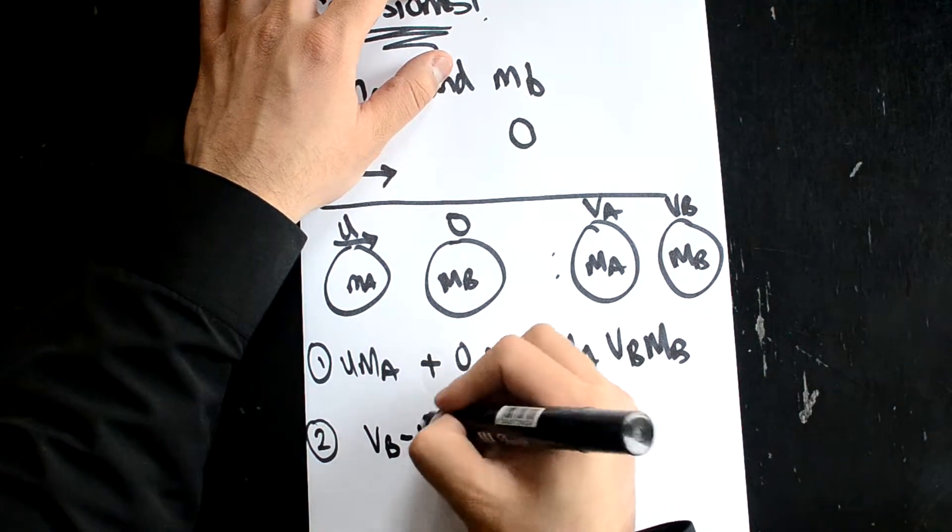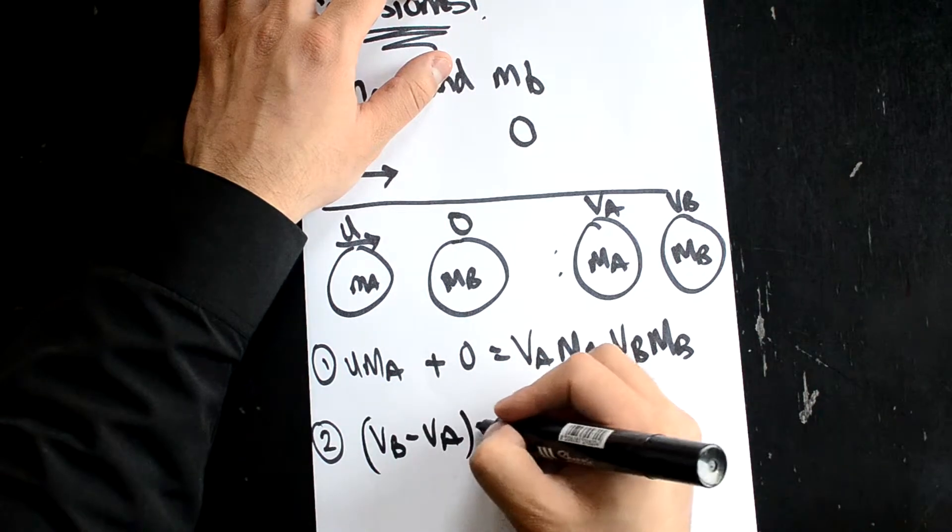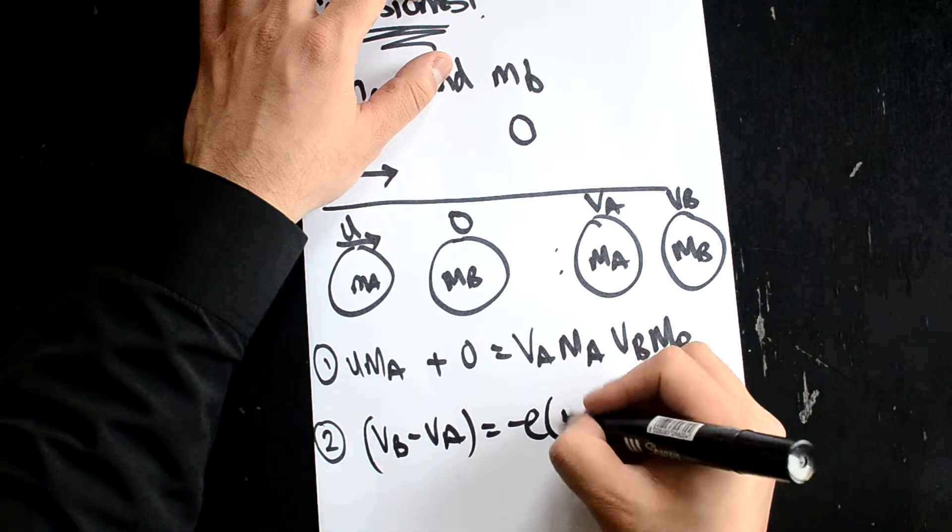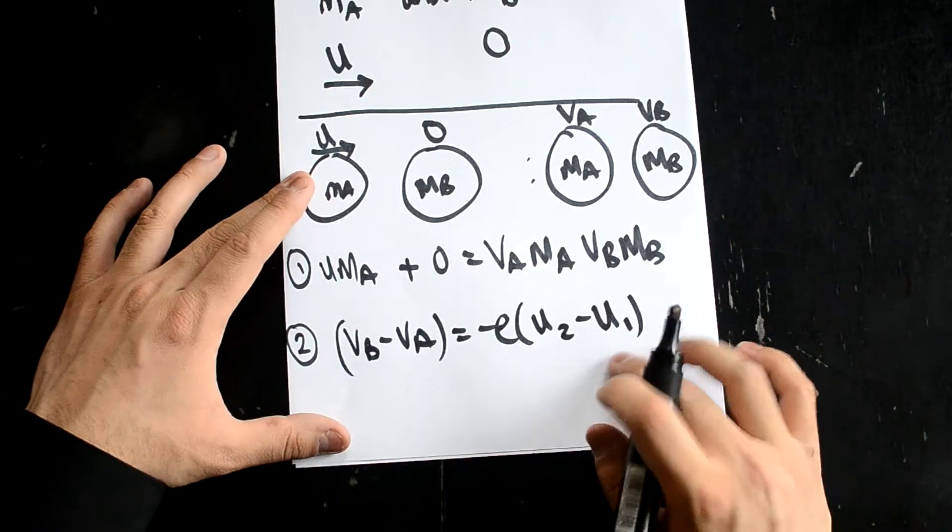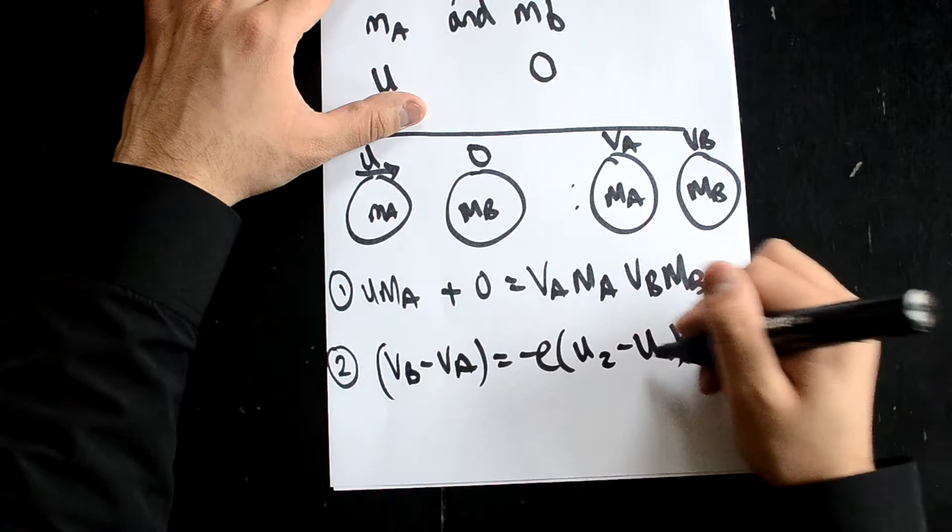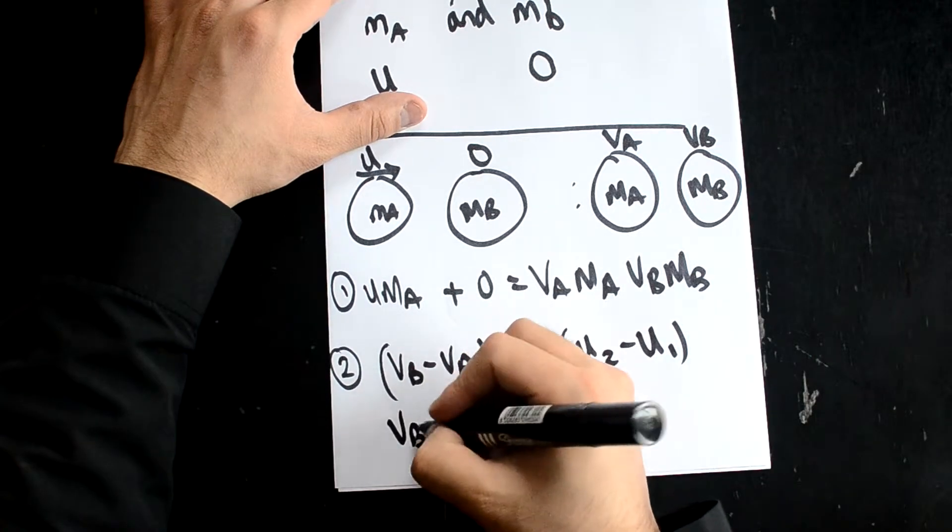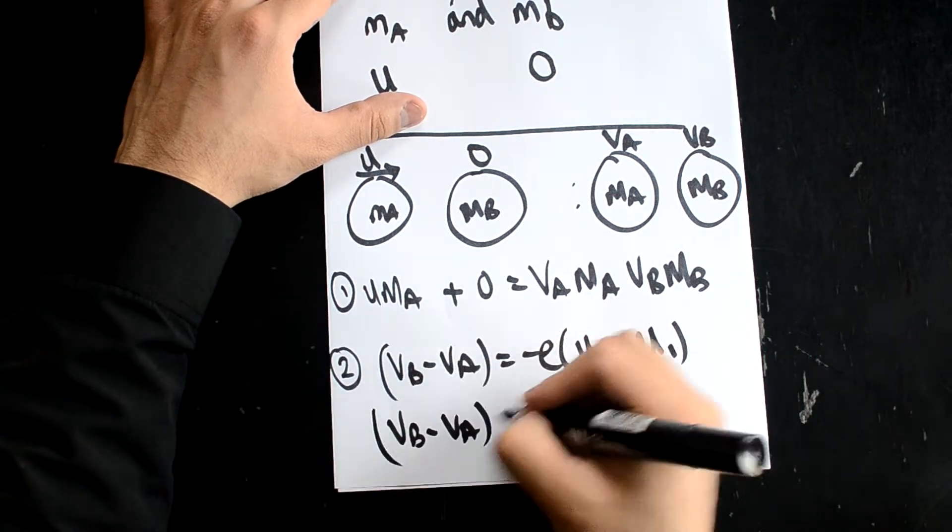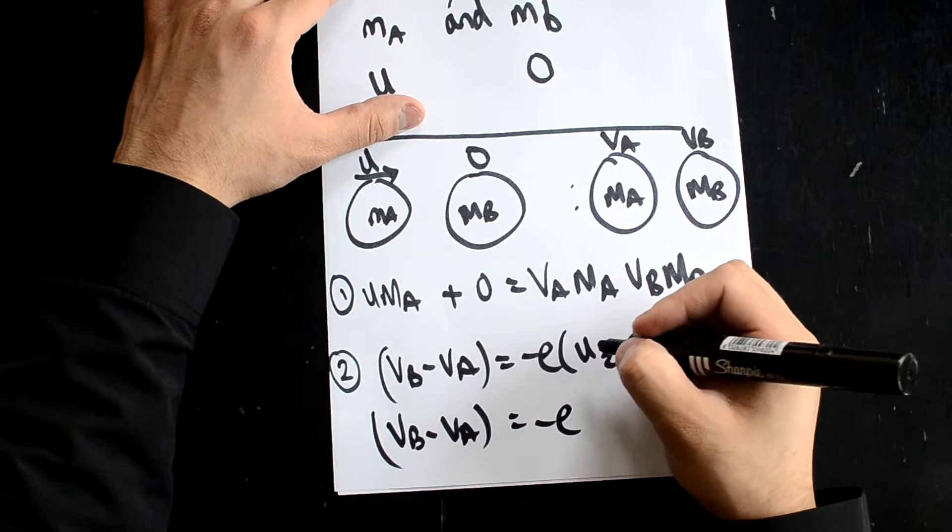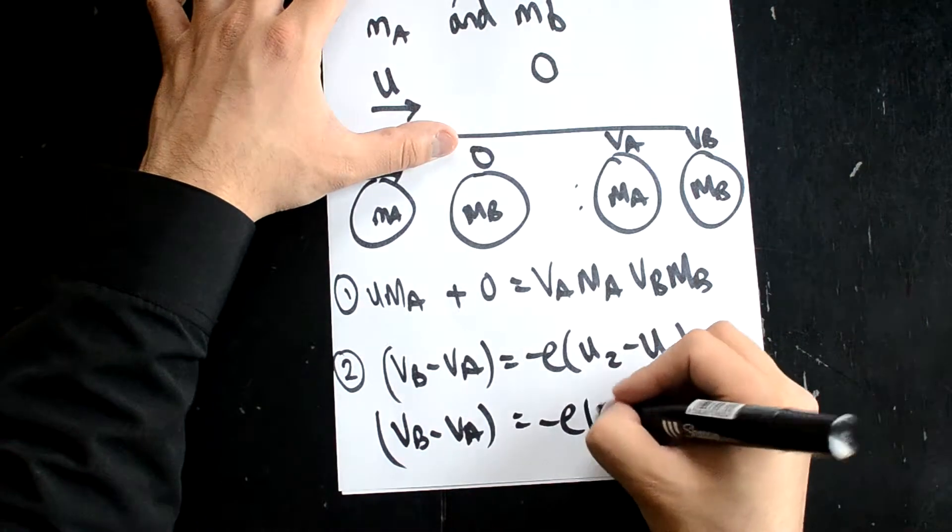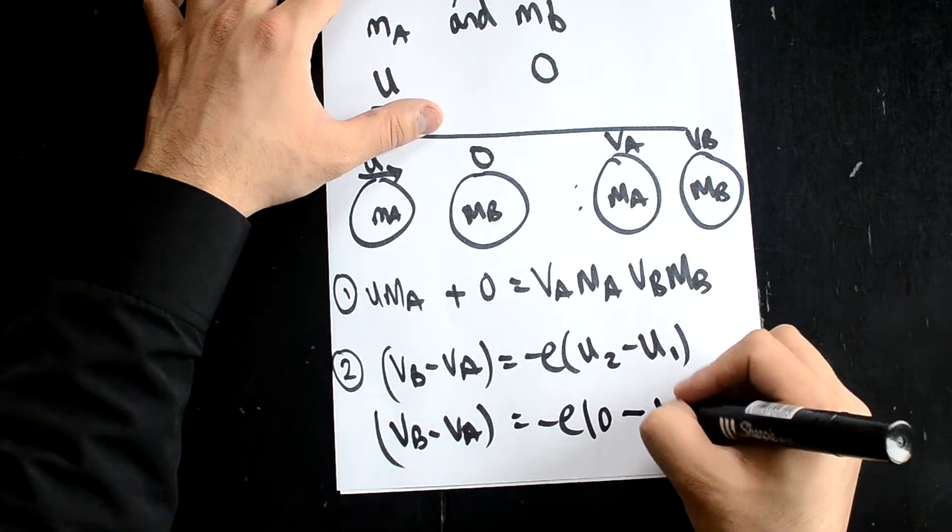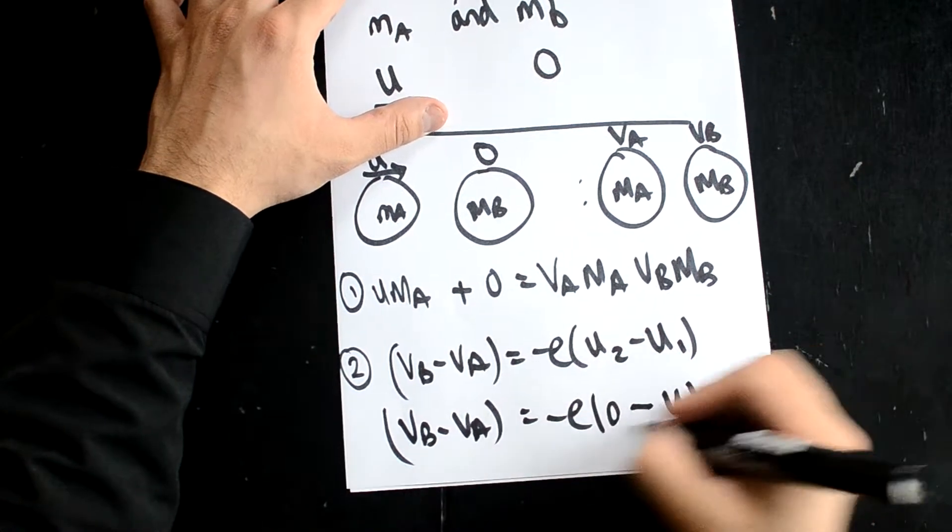A way of writing that could be vb minus va equals minus e times u2 minus u1. Implementing this, we get vb minus va equals minus e, and we know there is zero here, so it's zero minus u, which simplifies to eu.